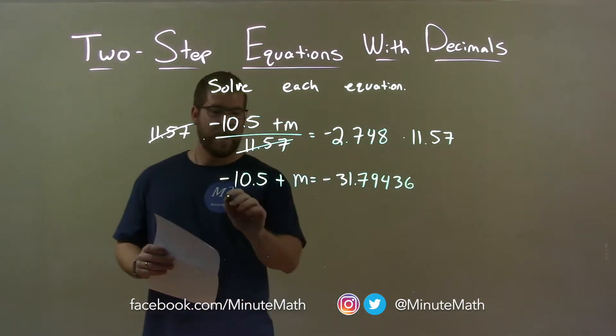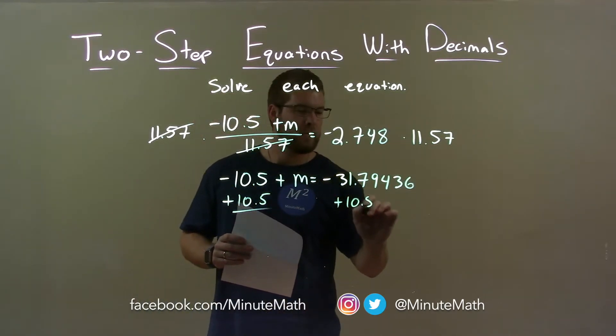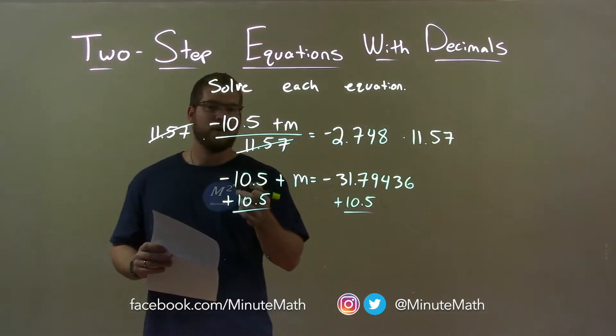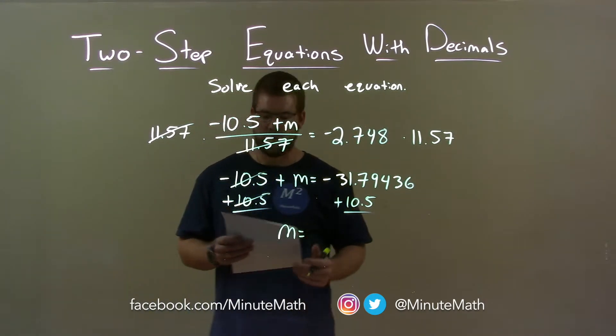And so now all I have to do is add 10.5 to both sides. Remember, negative 10.5, opposite of that is adding 10.5. The 10.5s cancel, leaving me m by itself on the left.